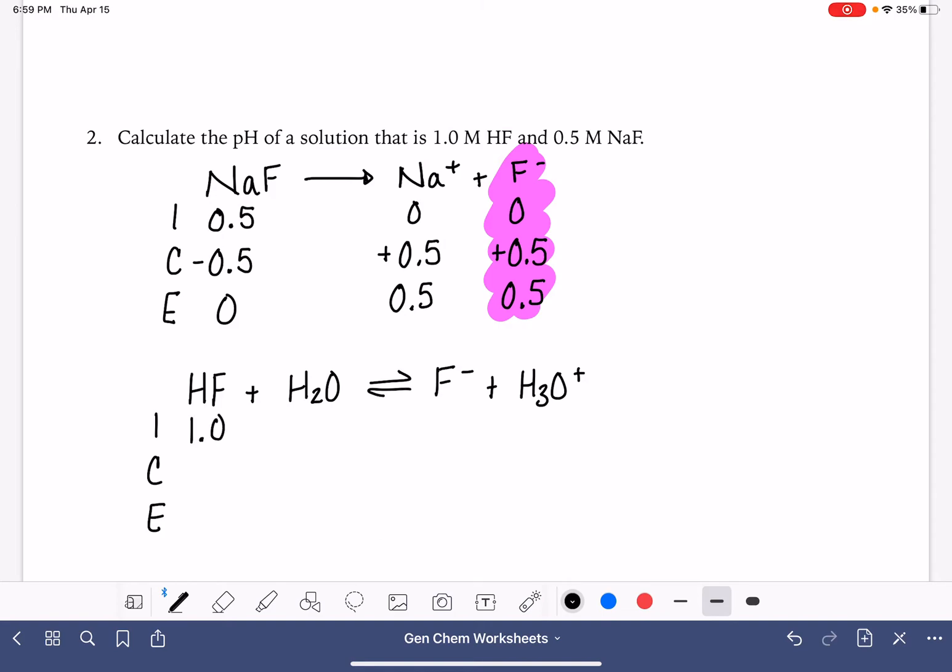But in this ICE table, because of the sodium fluoride, the NaF that's been added, we are starting not with 0 F minus. We're starting with 0.5 F minus. So this stuff is giving us an initial amount of F minus. And again, this is the common ion concept.